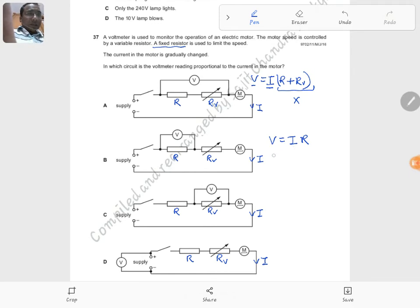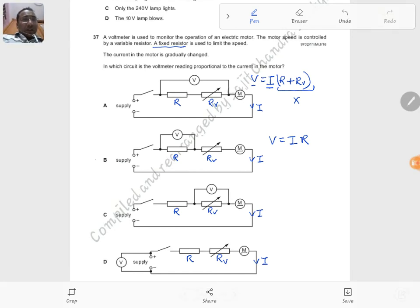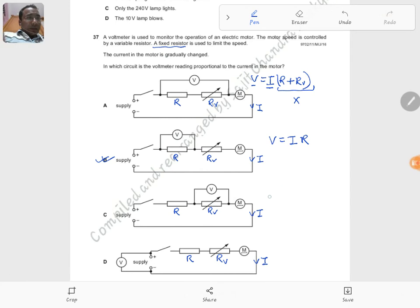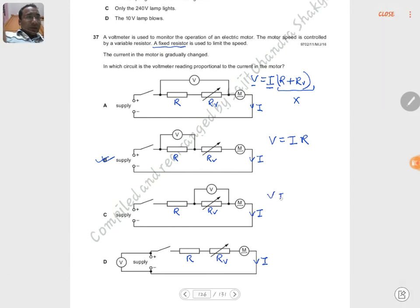Fixed means constant, so that means V and I are directly proportional to each other as required by the question. So this should be the correct choice. Let's go for the others as well. In this circuit, V is equal to I into RV.